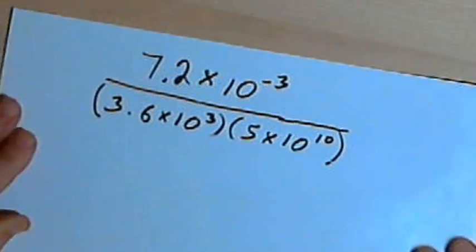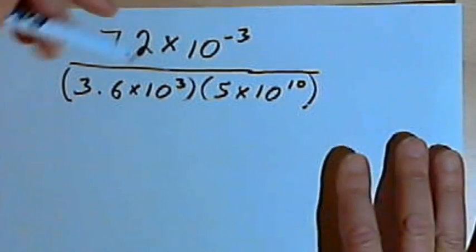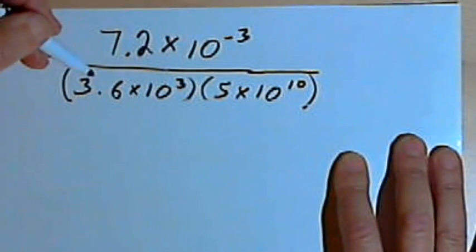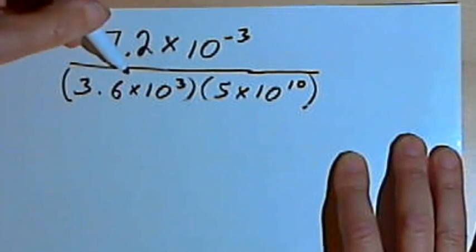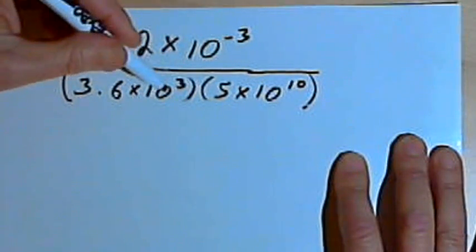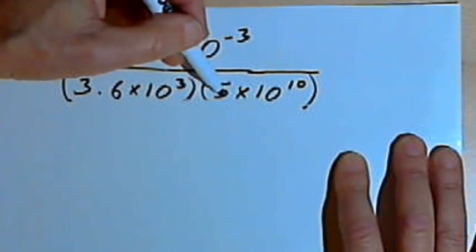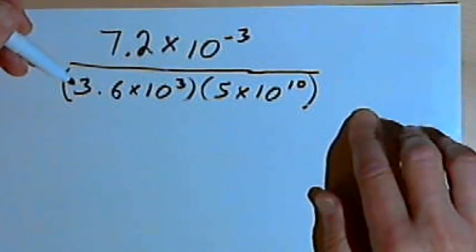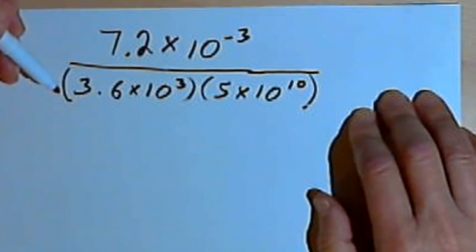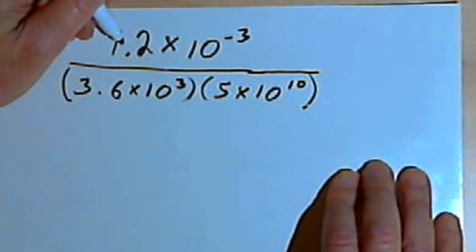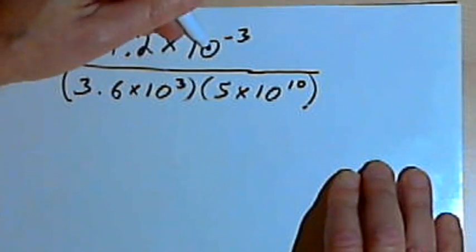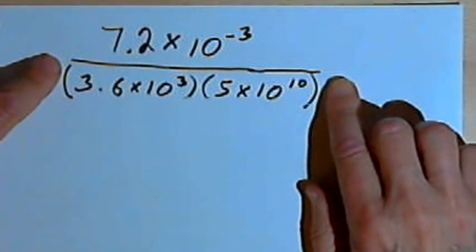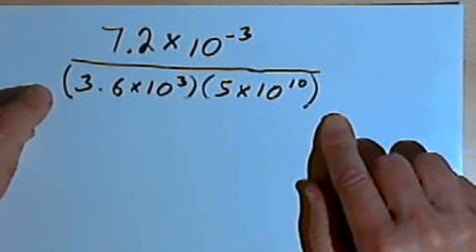Here's the last example. This is a bit more complicated. I've got 7.2 times 10 to the negative 3rd, and that's divided by two numbers in scientific notation, 3.6 times 10 to the 3rd times 5 times 10 to the 10th. Now, you may be tempted to do this in your calculator. And if you're going to do that, here's just a word of advice. After you put in the 7.2 times 10 to the negative 3rd, and your divided by sign,